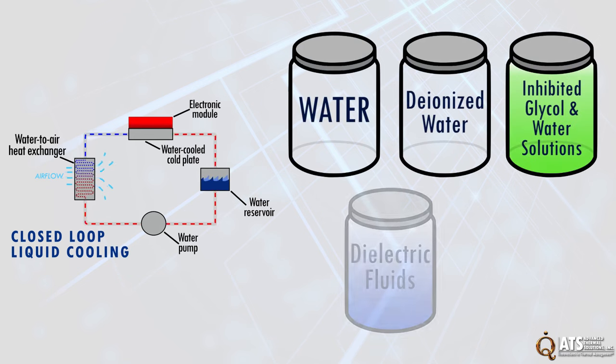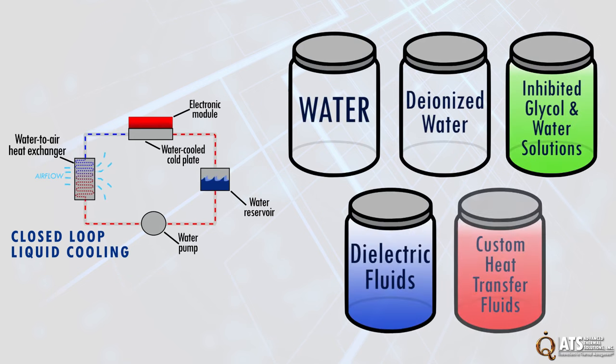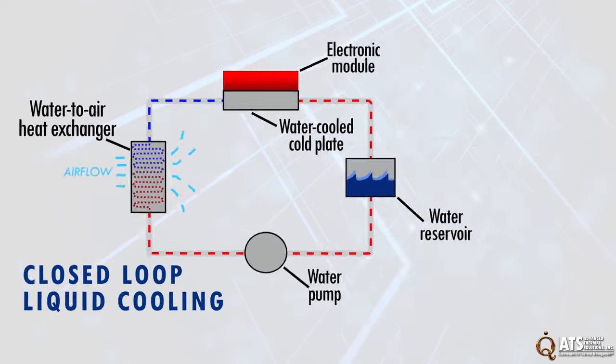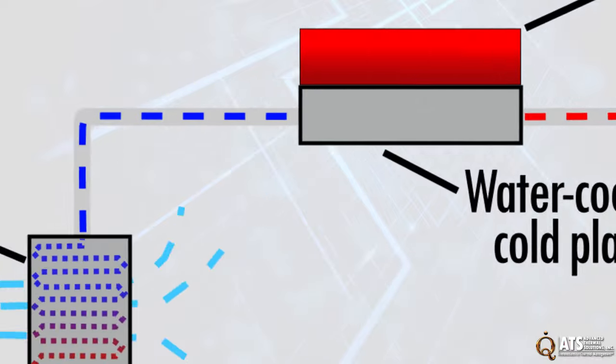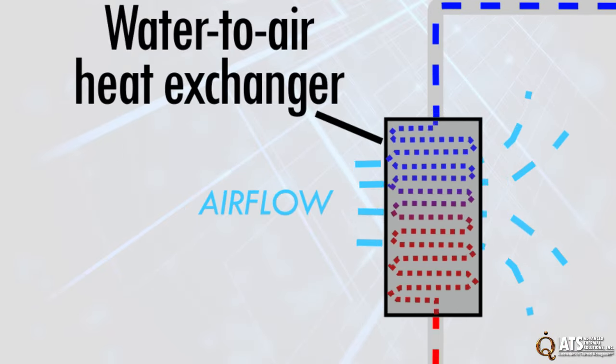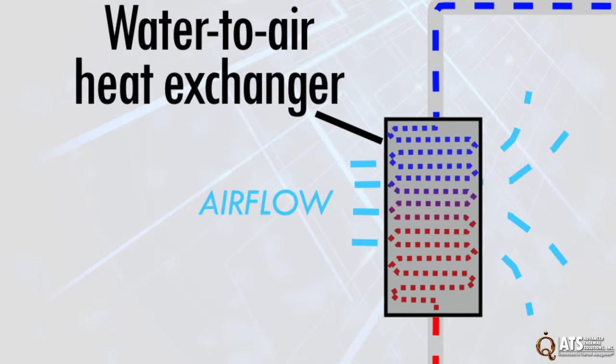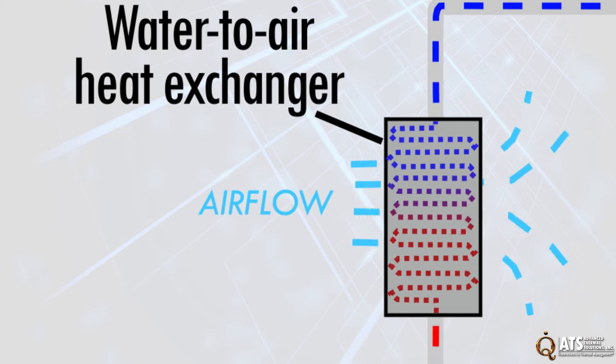In a liquid cooling loop, the coolant is pumped through a cold plate that is in contact with a hot integrated circuit. The heat dissipated from the component is transferred in the heat exchanger to the ambient, resulting in lowering the temperature of the coolant that gets pumped back to the hot integrated circuit.